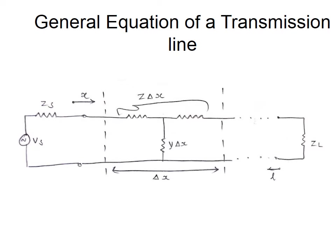The transmission line is an interconnection of an infinite number of T networks. Each T network has a series arm with impedance Z and shunt admittance Y. The series impedance Z is a combination of resistance R and inductance L, and the shunt admittance Y is a combination of conductance G and capacitance C.